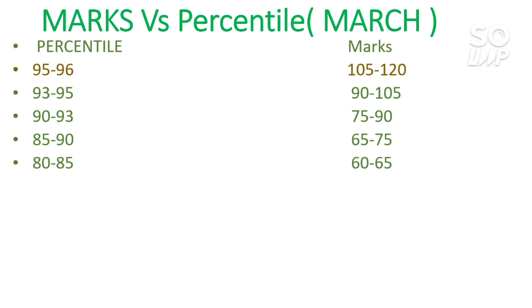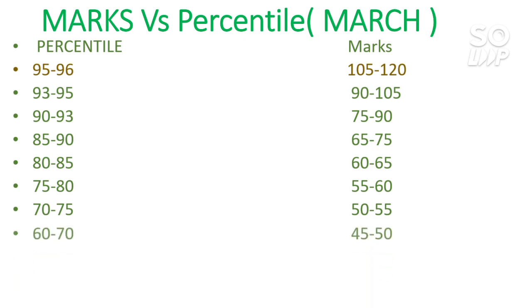For 75 to 80 percentile, you need 55 to 60 marks. SC/ST students from the home state of an NIT can get that NIT with core, EC, or IT branch. For 60 to 70 percentile, you need 45 to 50 marks. For 50 to 60 percentile — the cutoff range for SC/ST students — you need 40 to 45 marks. For 40 to 50 percentile, you need at least 30 to 40 marks.